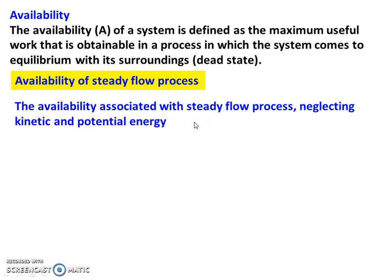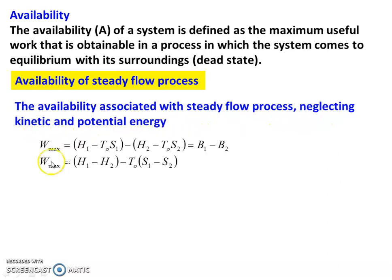A device working on a closed system is called a non-flow process. Practically, most devices use a flow process, while non-flow process is theoretical. For the availability of a steady flow process, neglecting kinetic and potential energy, the maximum work is: W_max = (H1 − T0·S1) − (H2 − T0·S2), where H is enthalpy, T0 is the surrounding temperature, and S is entropy.